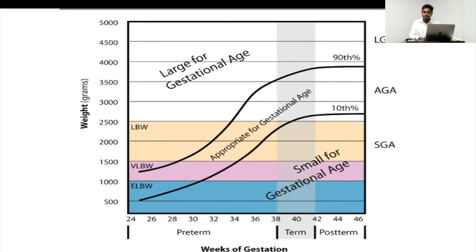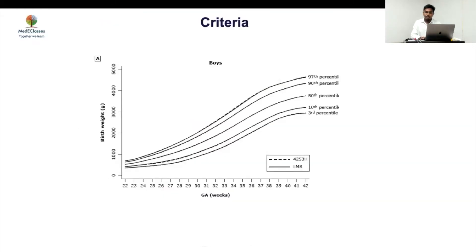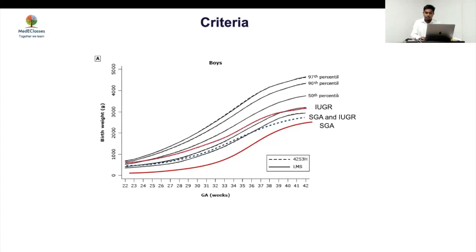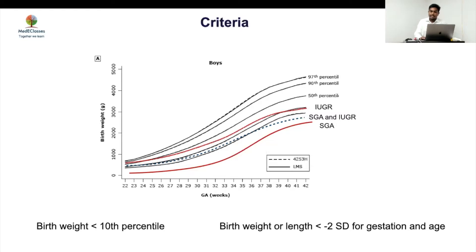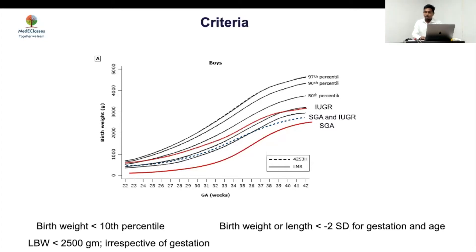We can divide SGA children into three categories: preterm SGA, term SGA, and post-term SGA. A child who was short in utero from the beginning with a normal growth velocity can be classified as SGA. Birth weight or length less than two standard deviations of gestational age is SGA, while any birth weight less than 2.5 kg — irrespective of gestation — defines low birth weight.